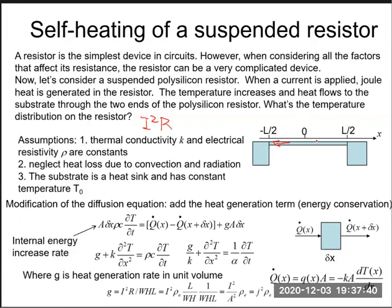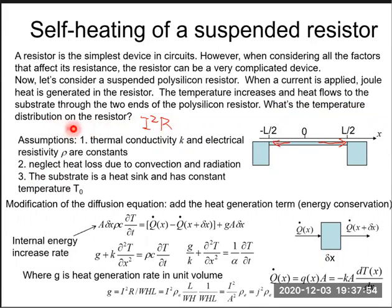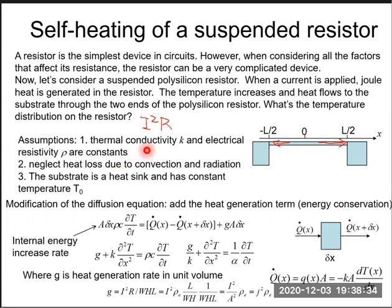The heat will be dissipated through the two ends of the polysilicon resistor. Our question is: what is the temperature distribution on the resistor? We can expect the temperature distribution is not constant — it will be a function of position X, where X is the horizontal position with origin at the center. The total length is L. We assume thermal conductivity K and electrical resistivity rho are constant and do not change with temperature; we also neglect heat loss due to convection and radiation, considering only thermal conduction.